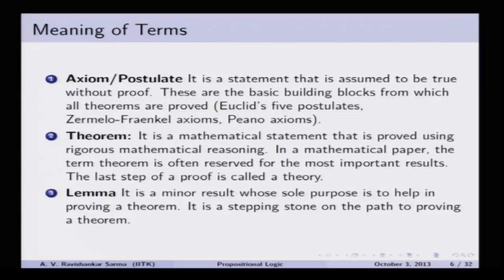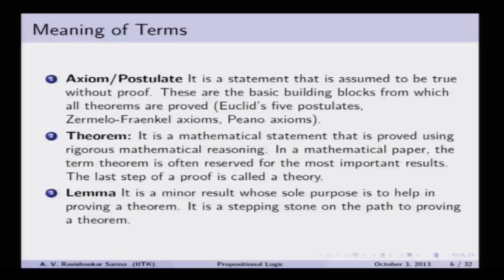When reading mathematical books, you will see terms like lemma, corollary, conjecture, and claim. A lemma is a minor result whose sole purpose is to help in proving a particular theorem — a supporting kind of theorem, a stepping stone on the path to proving certain theorems. It is a minor but important step you take in proving major theorems. A corollary is an important result whose proof relies heavily on a given theorem — it comes as an outcome of a particular theorem.